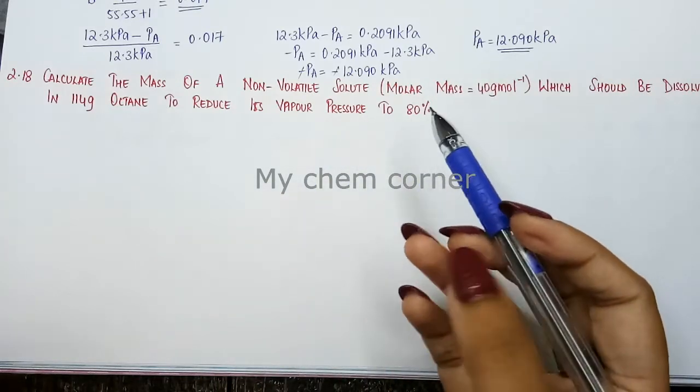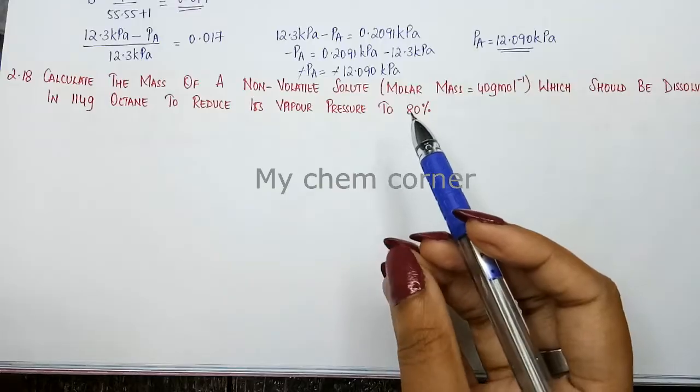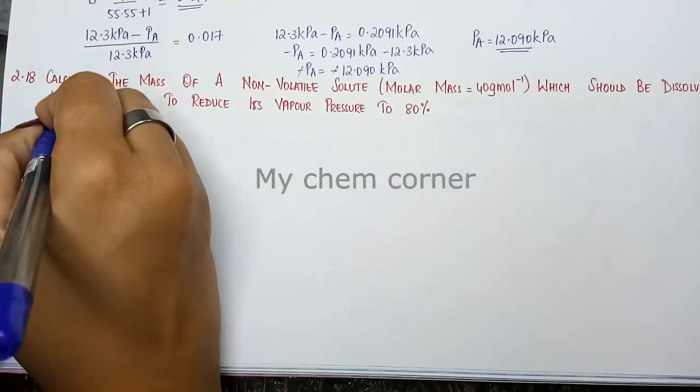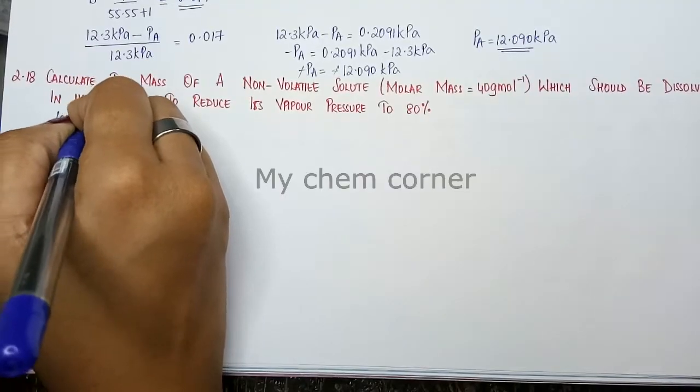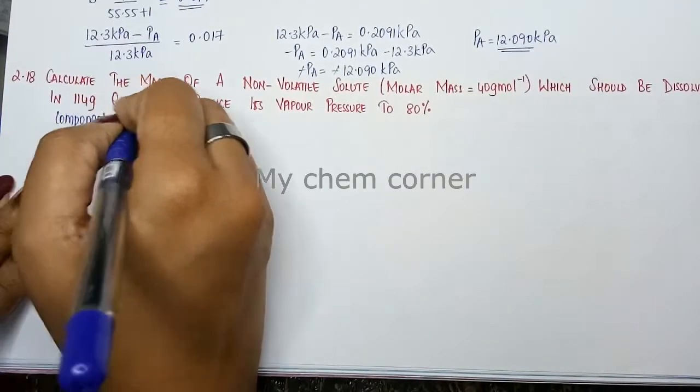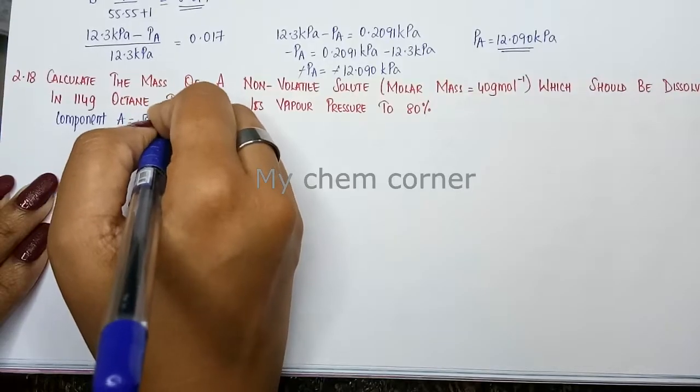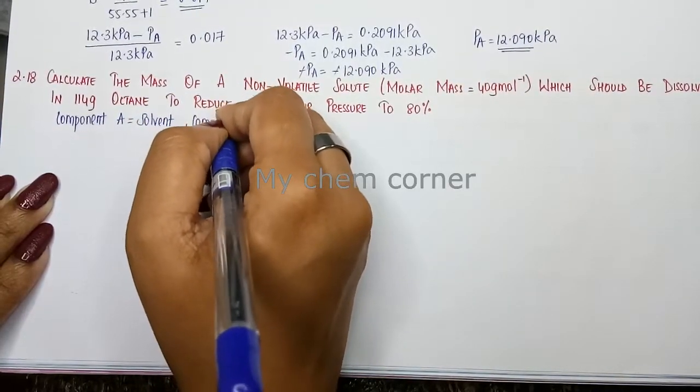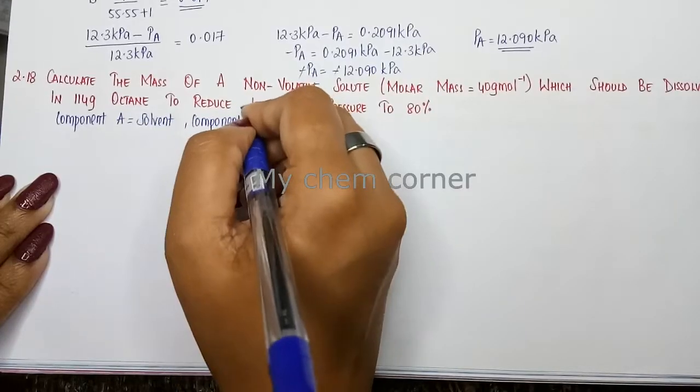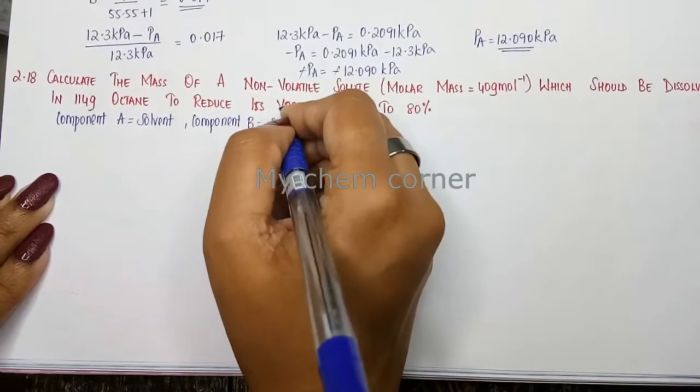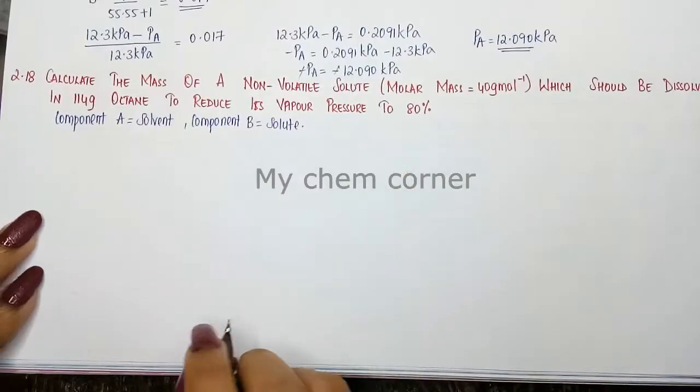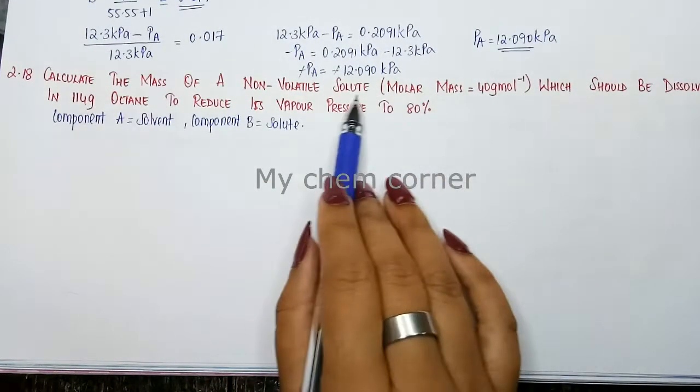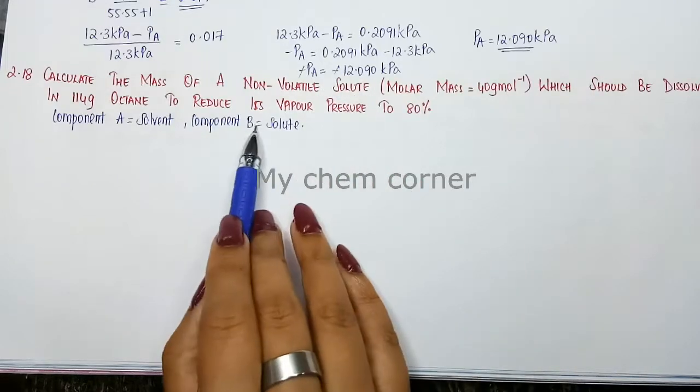Before that, when you have the formula with A and B, remember that component A is the solvent and component B is the solute. In this case, the molar mass of solute B is given, so MB = 40 gram per mole.